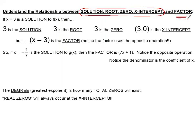Remember, all four of these — solution, root, zero, and X-intercept — mean the same thing. Let's see the relationship between those and what a factor is. If X equals 3 is a solution, then 3 is the root, 3 is the zero, the ordered pair (3, 0) is the X-intercept. But X minus 3 is our factor. Notice that the factor uses the opposite operation — if you have a positive root, you will have a minus sign in your factor.